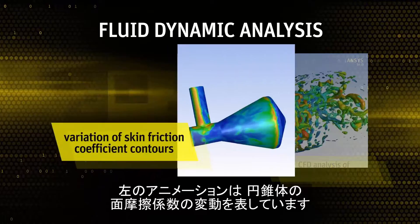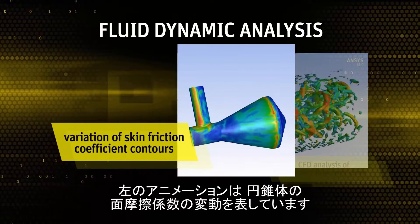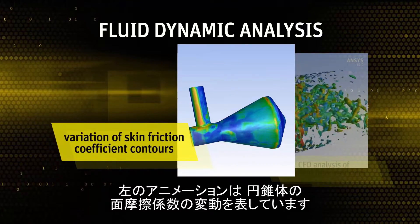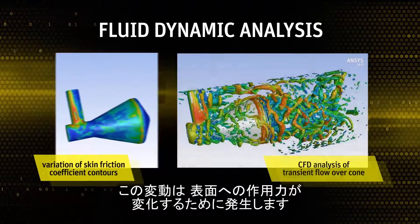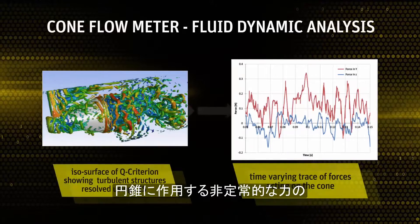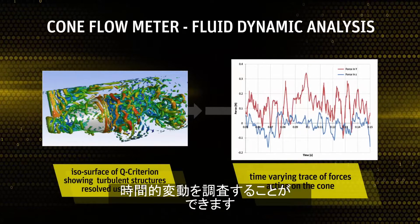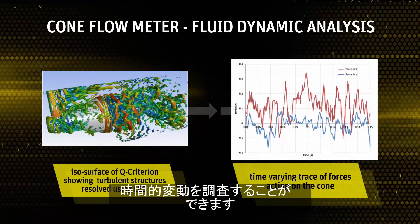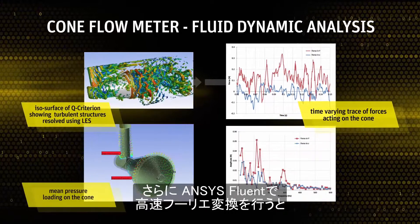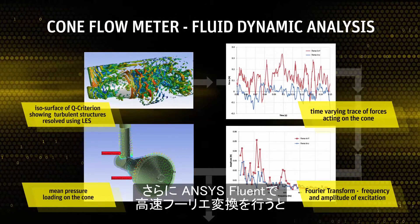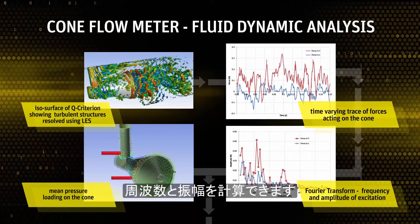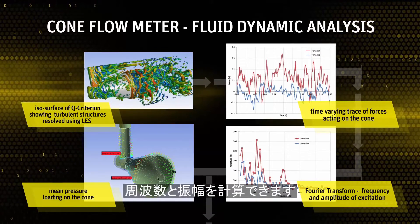The animation on the left shows the variation of the skin friction coefficient contours on the surfaces of the cone caused by changing forces acting on the surface. Engineers are able to monitor the transient force components acting on the cone over a period of time. Then, using the fast Fourier transform function in ANSYS Fluent, they are able to obtain the frequency and amplitude of the fluid dynamic force due to the vortex shedding.